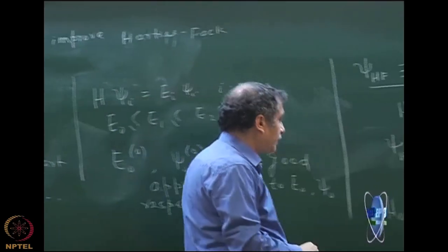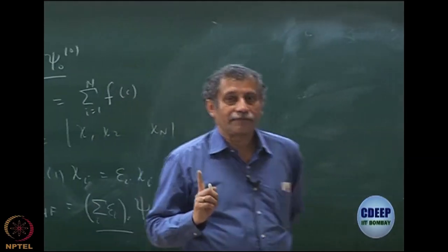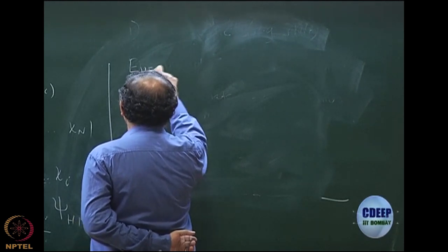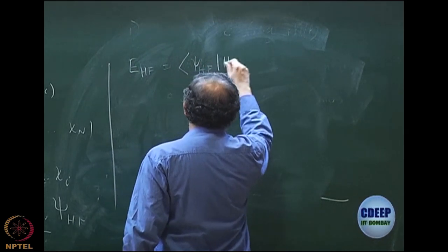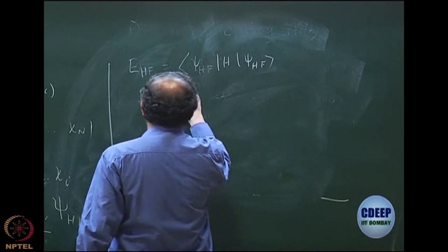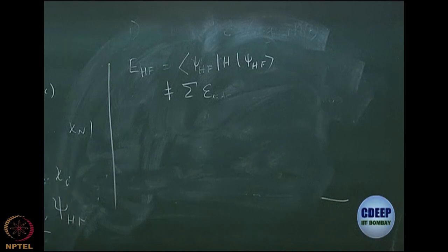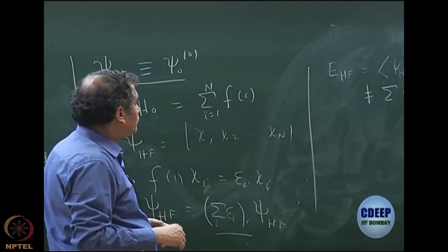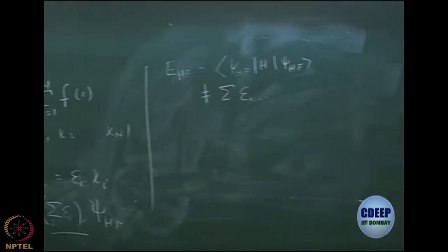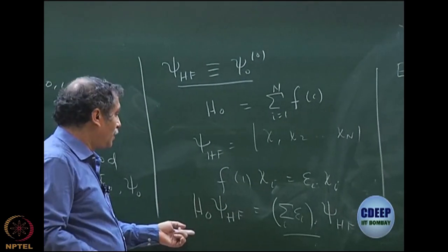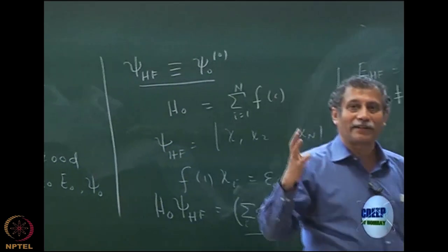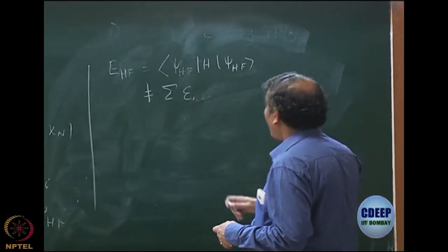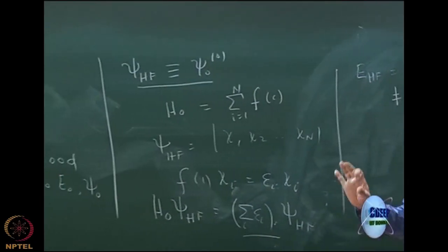However, note one very important point: the eigenvalue of this H₀ problem is not the Hartree-Fock energy. The Hartree-Fock energy has been defined as ⟨ψ_HF|H|ψ_HF⟩, which I have said many times is not the sum of the orbital energies. In fact, it is the sum of orbital energies minus the over-counted terms — the Coulomb and exchange contributions. You may wonder if I can get an H₀ whose eigenfunction is ψ_HF and whose eigenvalue is E_HF; that would be even better, and I will come to that point.